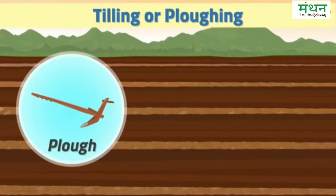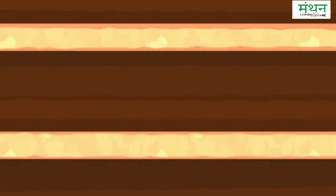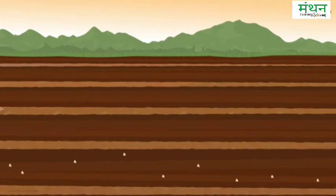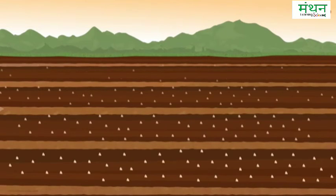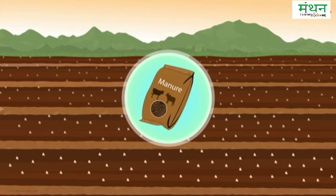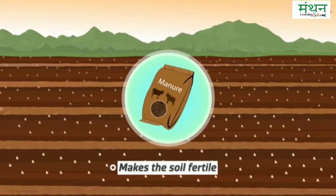Even after ploughing, huge chunks of soil could be left behind. These chunks need to be broken down into smaller fragments. Soil also needs to be levelled so that the land is even and sowing of seeds can take place. If the soil has not regained its fertility, manure can be added to make the soil fertile.